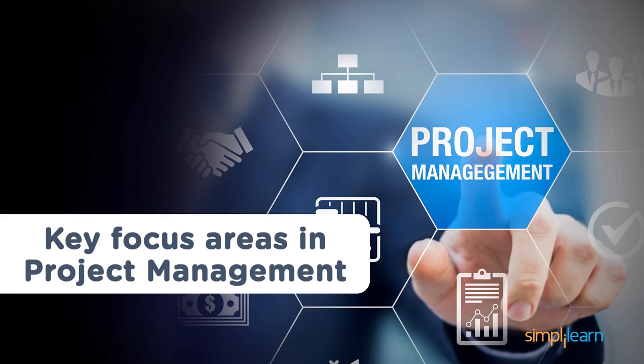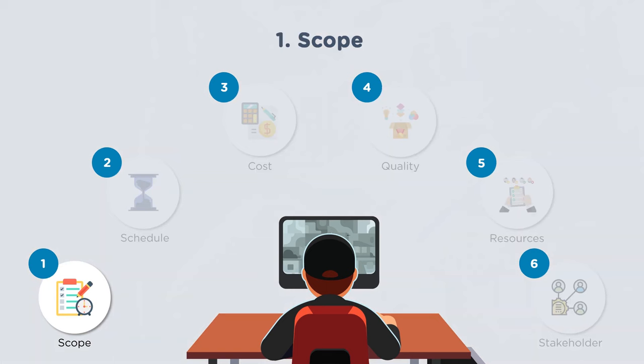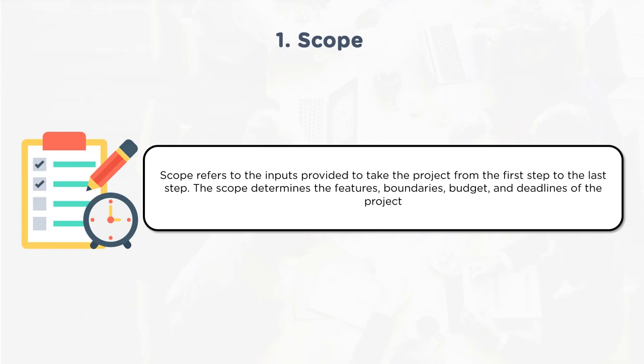The six constraints — scope, schedule, cost, quality, risk, and resources — must be kept in mind for project success. The key focus areas are scope, schedule, cost, quality, resources, and stakeholders. Scope defines what needs to be delivered, what is in scope, and what is out of scope.